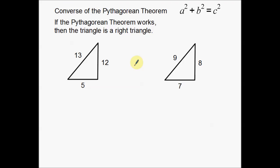Basically what we're going to be doing is instead of using the Pythagorean Theorem to solve for sides or the hypotenuse of a triangle, we're actually going to use it for something else. If the Pythagorean Theorem works, then the triangle is a right triangle.